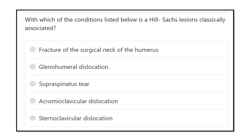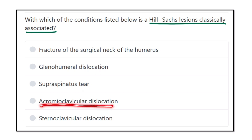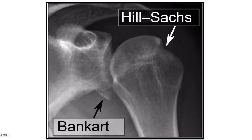With which of the conditions listed below is a Hill-Sachs lesion classically associated? The options are: fracture of the surgical neck of the humerus, glenohumeral dislocation, supraspinatus tear, acromioclavicular dislocation, and sternoclavicular dislocation. Let's see the Hill-Sachs lesion.